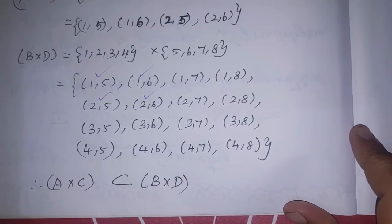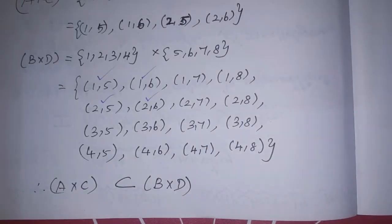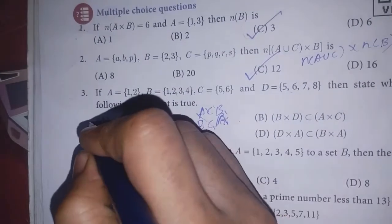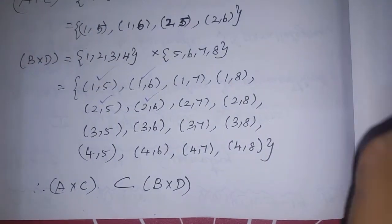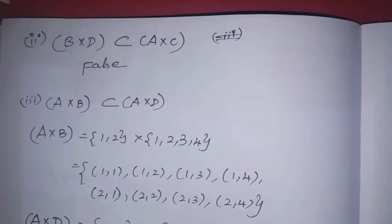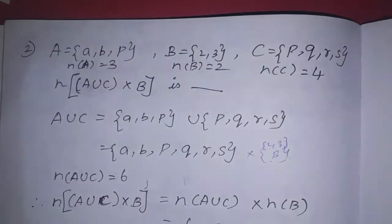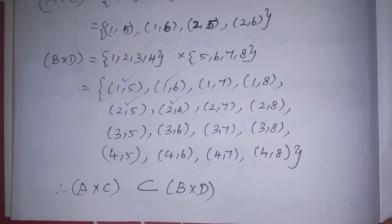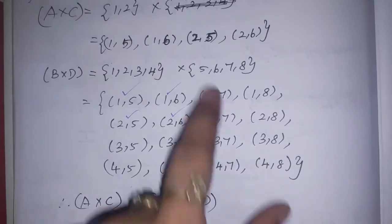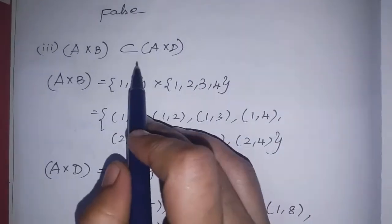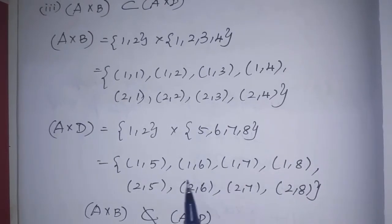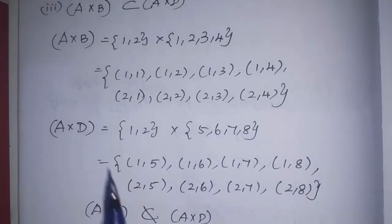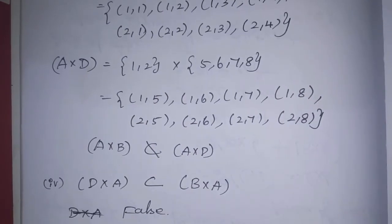Let me verify the other options. Second option: B×D is contained in A×C — this is false, since B×D is much larger. Third option: A×B is contained in A×D — A×B is not contained in A×D, so this is also false. Fourth option: D×A is contained in B×A — this is also false. So option A, the first statement, is the correct answer.